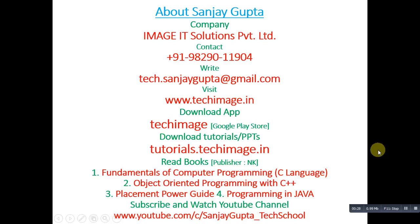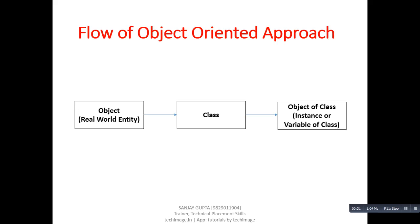Now let's take a look at classes and objects in C++. Before starting the discussion, let's understand the flow of the object-oriented approach. There are three blocks: the first contains an object, which is a real world entity. After identification of the object, we implement a class, and after implementation of a class we can create an object of the class, which is known as an instance or variable of the class.